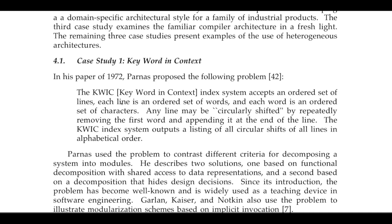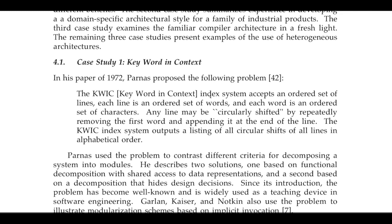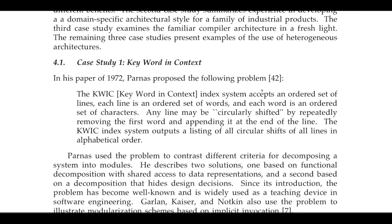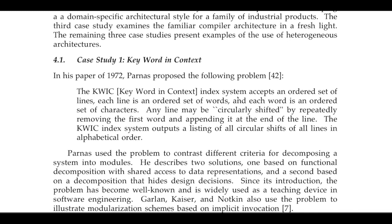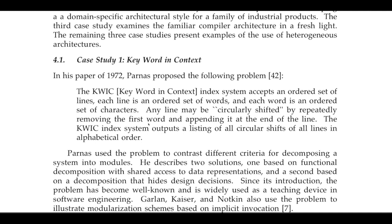So what's the problem statement? The Keyword in Context index system accepts an ordered set of lines. Each line is an ordered set of words, and each word is an ordered set of characters. Any line may be circularly shifted by repeatedly removing the first word and appending it at the end of the line. The system outputs a listing of all circular shifts of all lines in alphabetical order.